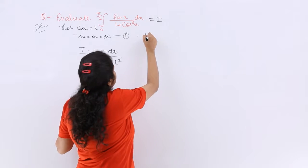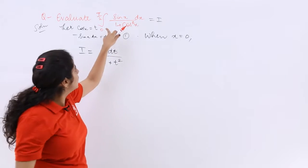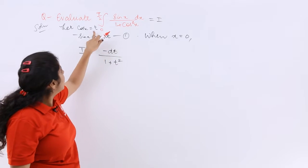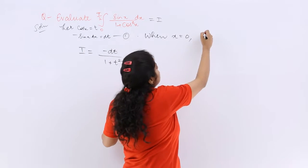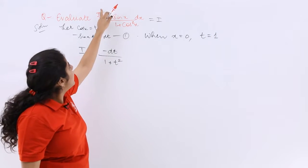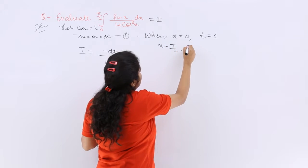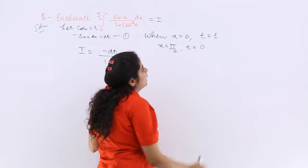So I write when my x is equal to 0, because the lower limit was 0, what is my t? That is cos 0, so cos 0 is 1. And when my x is equal to π/2, what is my t? It is cos π/2 which is 0.